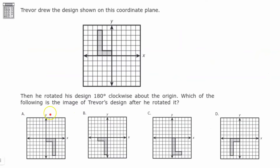Your turn. Trevor drew an L-shaped design on a coordinate plane. He then rotated his design 180 degrees clockwise about the origin. Which of the following is the image of Trevor's design after the rotation? Go ahead and pause, and come back when you're done.